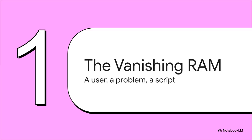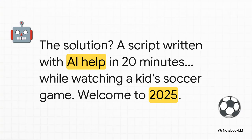Our story starts with a Proxmox user, Dr. Floyd Pepper, who was running into this exact problem all the time. But instead of deploying some massive, complicated monitoring system, he decided to take a much more direct approach. He used AI assistants — Gemini and Jules — to whip up a script in just 20 minutes. He was literally debugging and generating code from the sidelines of his kid's soccer game. Sideline DevOps — what a time to be alive.